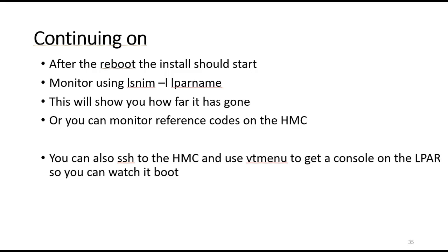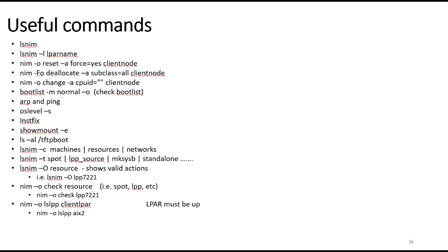Once the system reboots — because it will reboot at the end of the install — you can import any volume groups, remirror rootvg, and do whatever tailoring you need. After the reboot the install should start. You can monitor it using LSNIM or from the HMC looking at reference codes. I always SSH to the HMC and use VTMenu to get a console on the LPAR so I can watch everything it's doing. There are a number of useful NIM commands, and I have a bunch listed — these are commands you should keep in your back pocket because you'll probably end up needing to use them all.